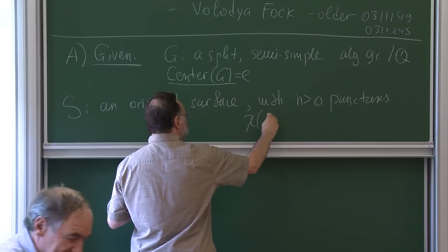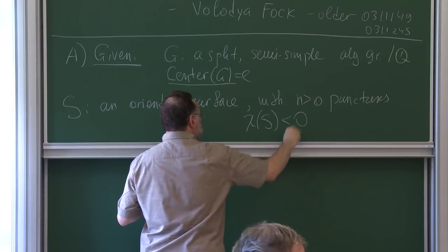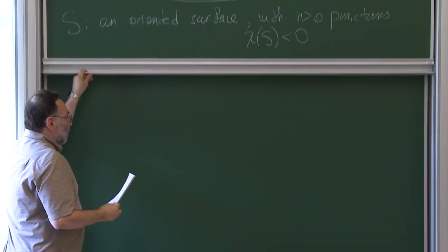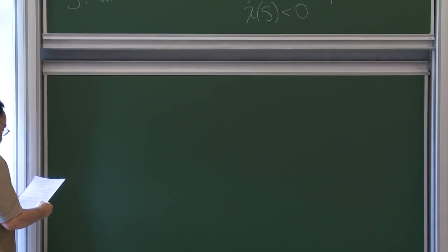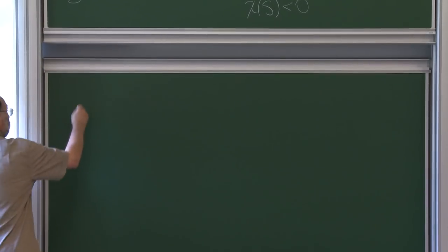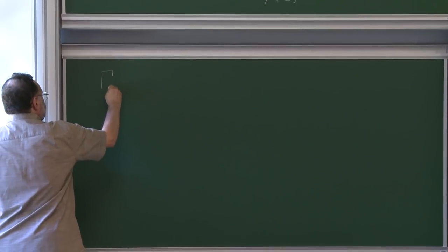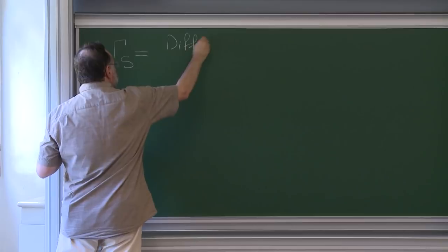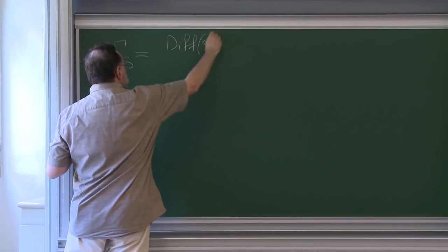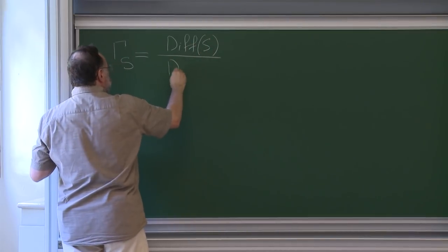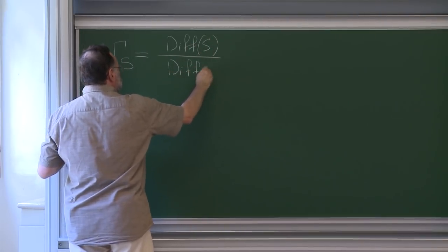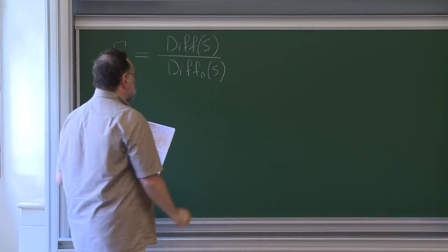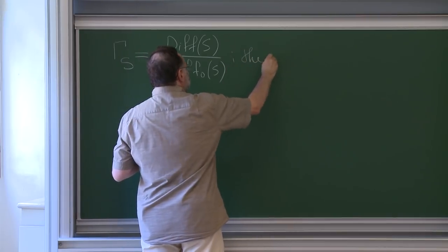We usually assume that the Euler characteristic of S is less than zero, so it's hyperbolic. We also have a discrete group, the mapping class group, which is defined as the group of diffeomorphisms of the surface S modulo the connected component — the diffeomorphisms isotopic to identity.